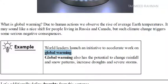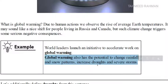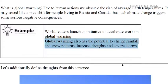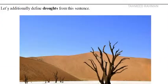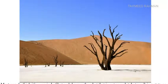In some areas it becomes much colder, some areas become warmer, in some areas there is a lot of rainfall, and in some areas there is almost no rainfall, which results in drought. Global warming also has the potential to change rainfall and snow patterns, and increase droughts and severe storms. Let's additionally define the word drought.